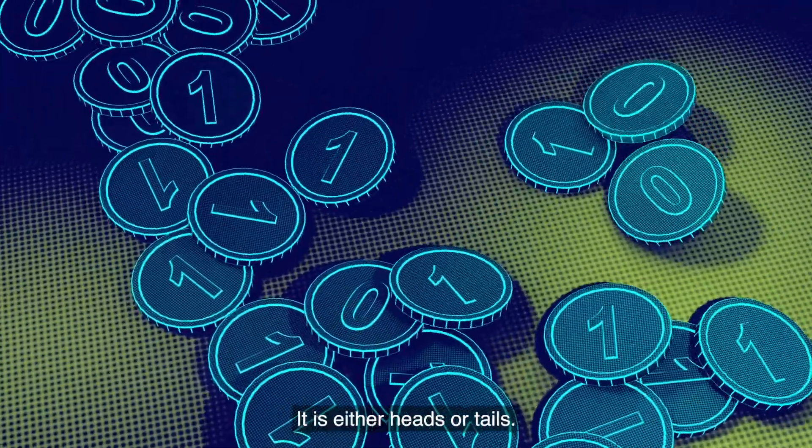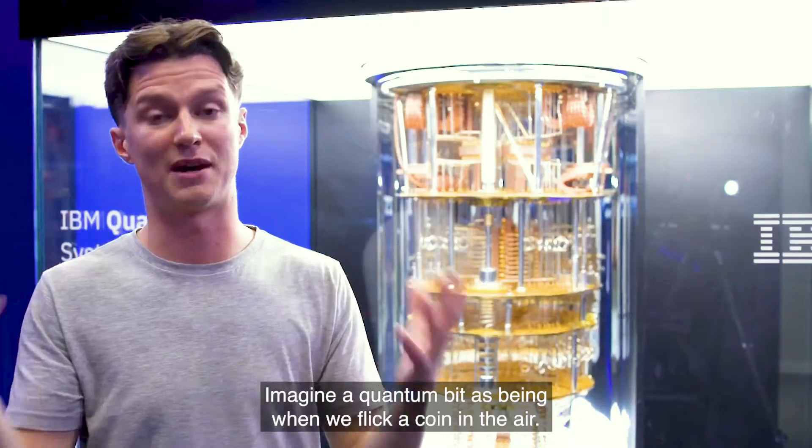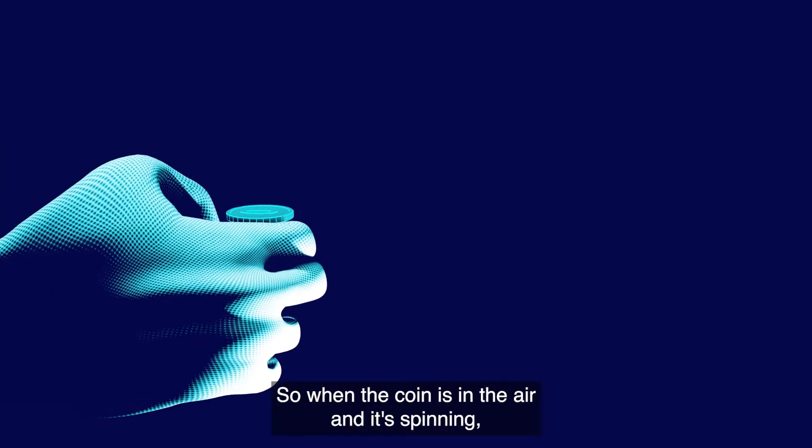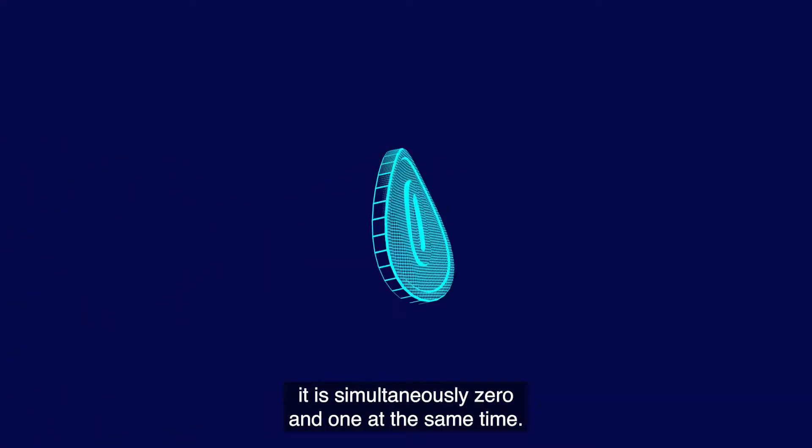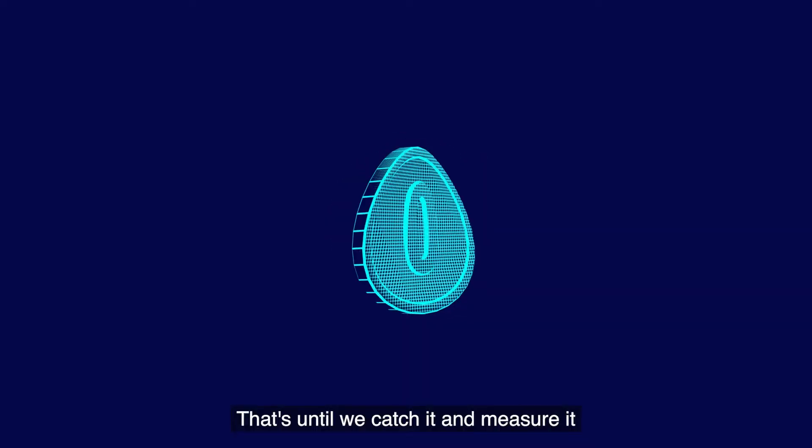It is either heads or tails, it is either in state zero or one. Imagine a quantum bit as being when we flick a coin in the air. So when the coin is in the air and it's spinning, it is simultaneously zero and one at the same time. That's until we catch it and measure it and reveal whether our qubit is in state zero or one.